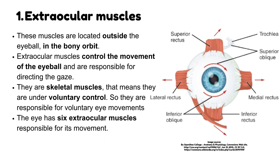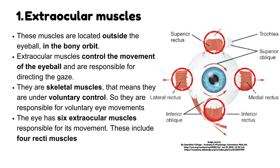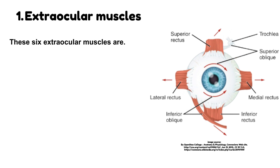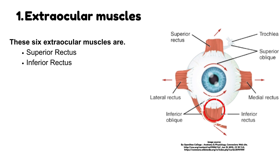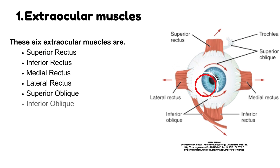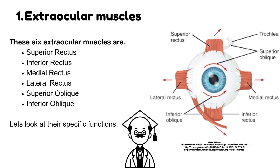The eye has six extraocular muscles responsible for its movement. These include four recti muscles and two oblique muscles. The six extraocular muscles are: Superior rectus, Inferior rectus, Medial rectus, Lateral rectus, Superior oblique, and Inferior oblique. Let's look at their specific functions.